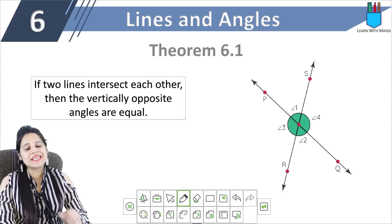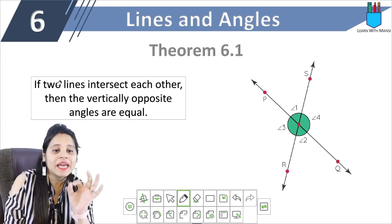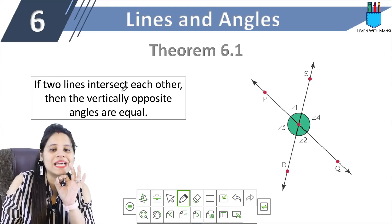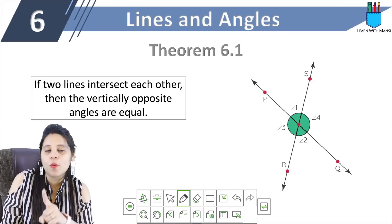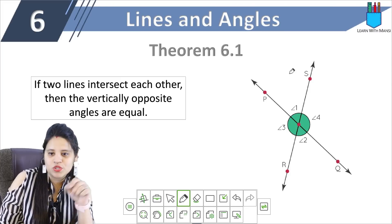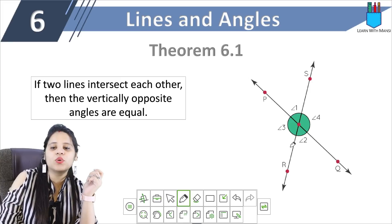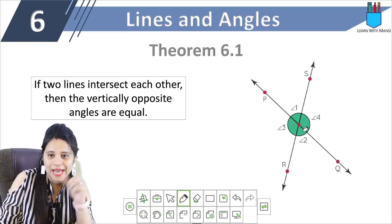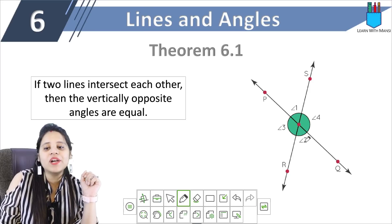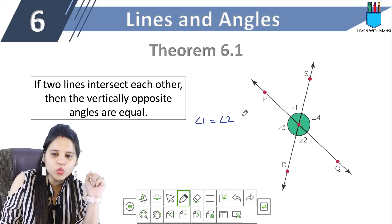Next we have Theorem 6.1. What is Theorem 6.1? If two lines intersect each other, then the vertically opposite angles are equal. So what are vertically opposite angles? If two lines intersect, the angles formed opposite each other are vertically opposite angles. Like in this case, angle 1 and angle 2 are vertically opposite, so angle 1 is equal to angle 2.